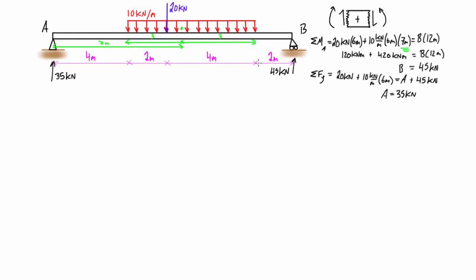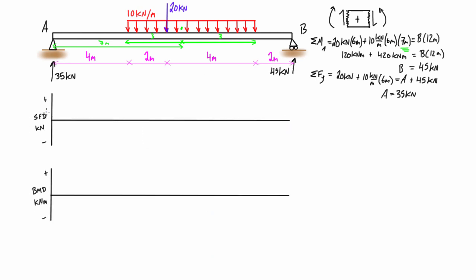Now we can set up our shear force and bending moment diagrams. We'll start drawing the shear force diagram from left to right, taking a virtual cut just to the right of point A. We have the reaction of 35 kN pressing up and some internal shear pressing down. Just to the right of the cut, the shear has to be 35 kN pressing down to counteract that. When shear presses down to the right of a virtual cut, that is a positive value, so this will be 35 kN on the positive side.